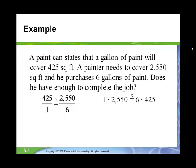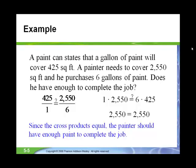We check if this proportion is true by doing cross multiplication. One times 2,550 and six times 425. They equal each other. So provided he doesn't make much of a mess and uses everything in the can, it looks like the painter should have enough paint to complete the job.